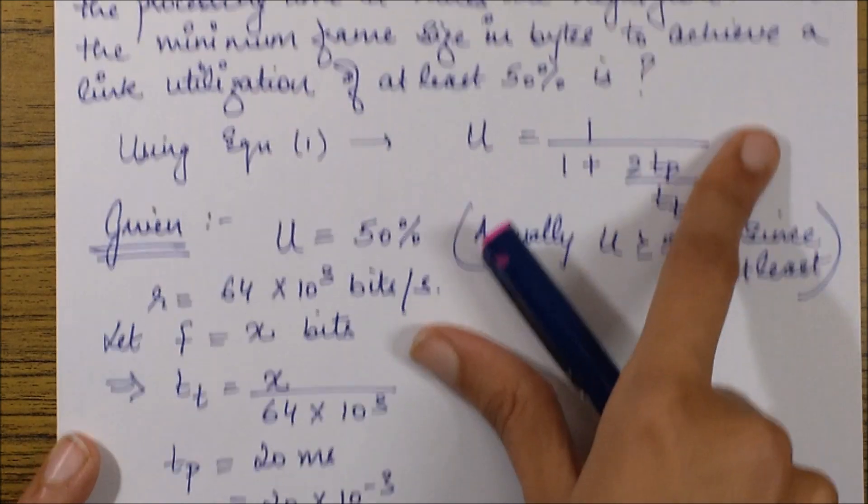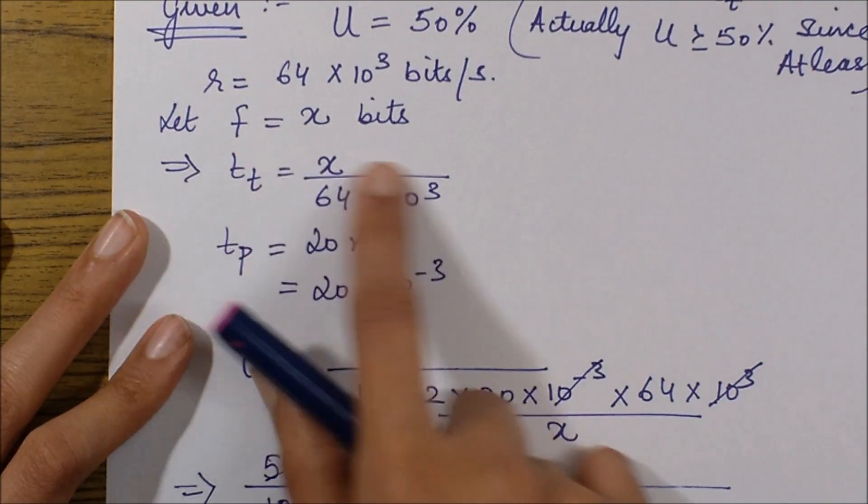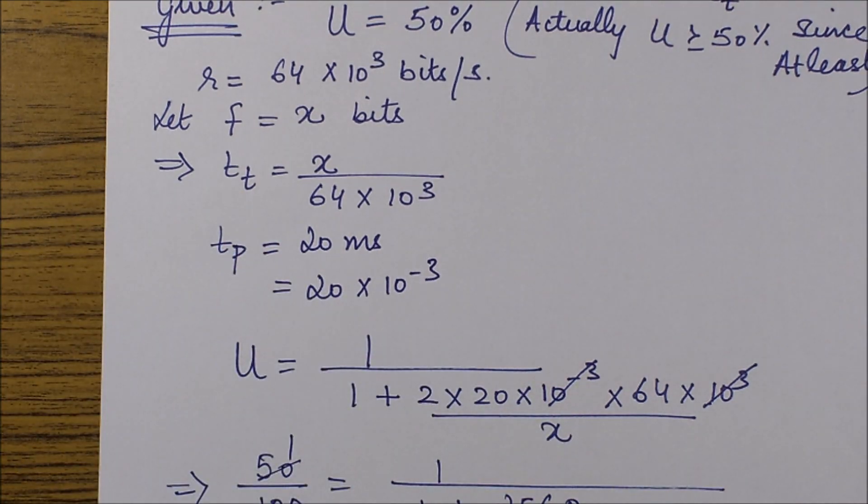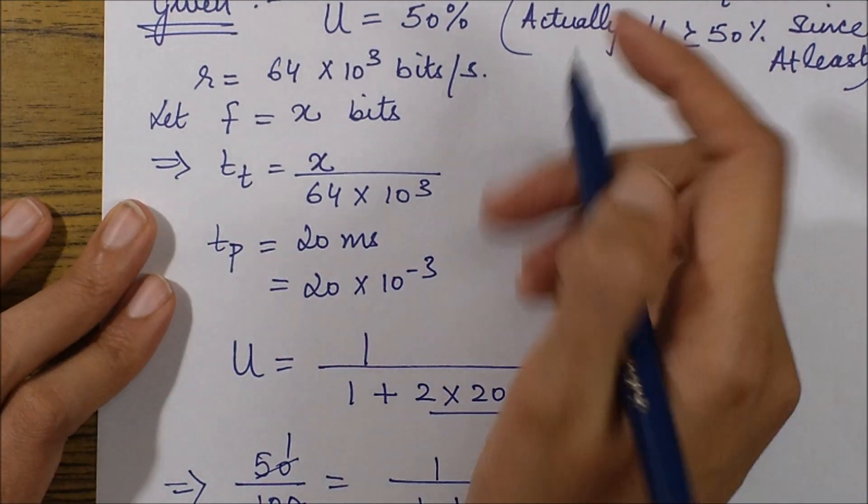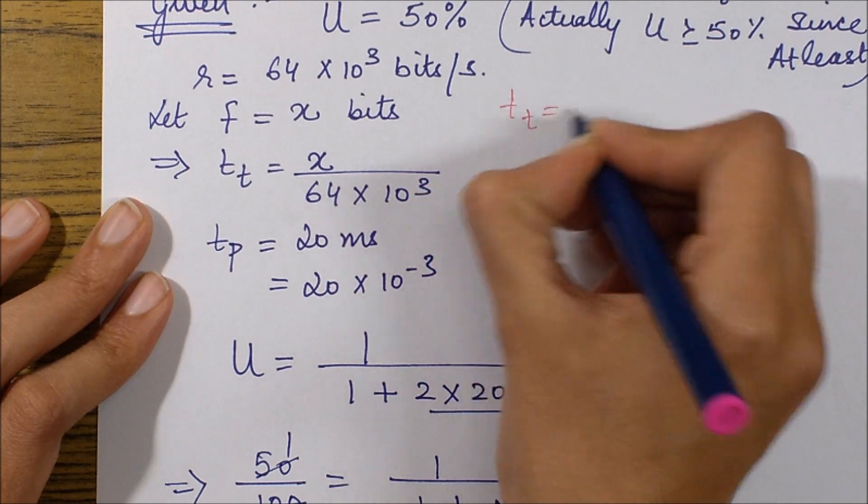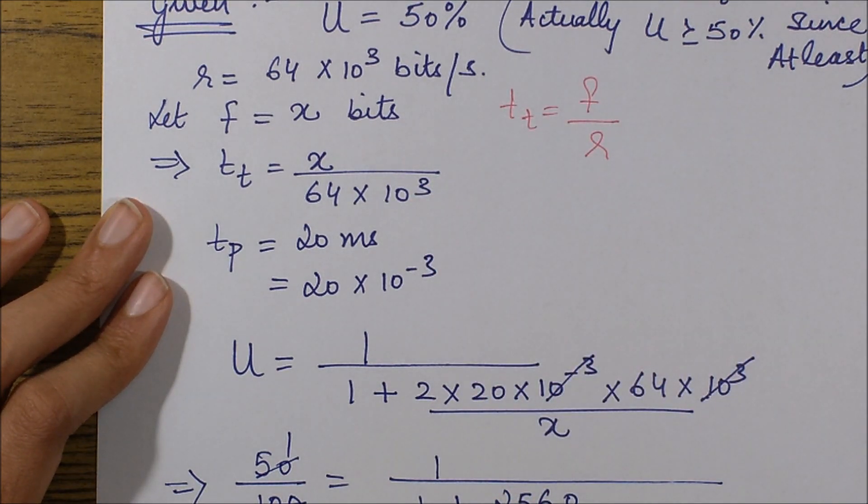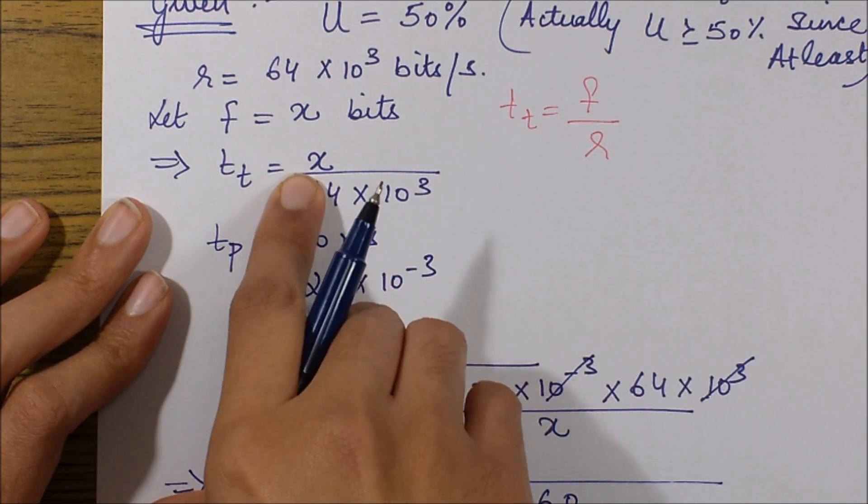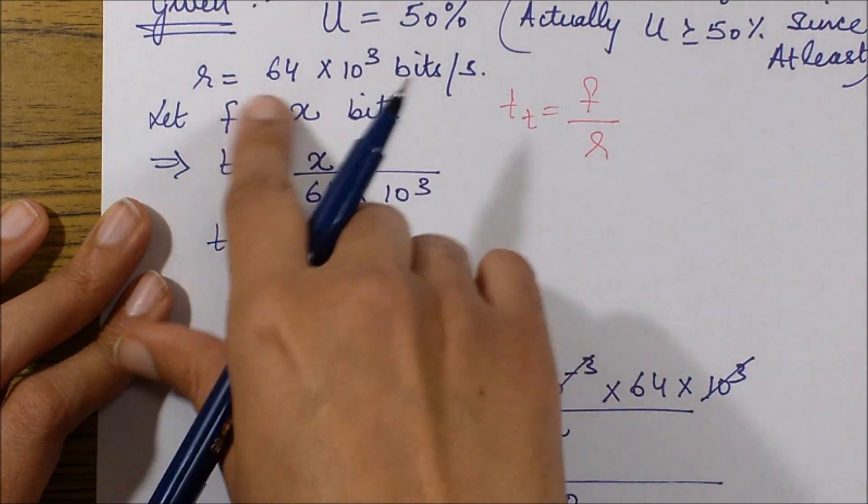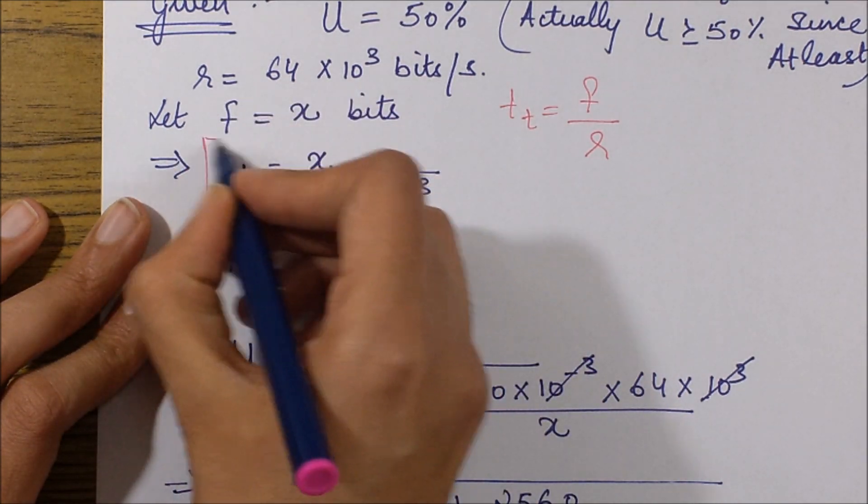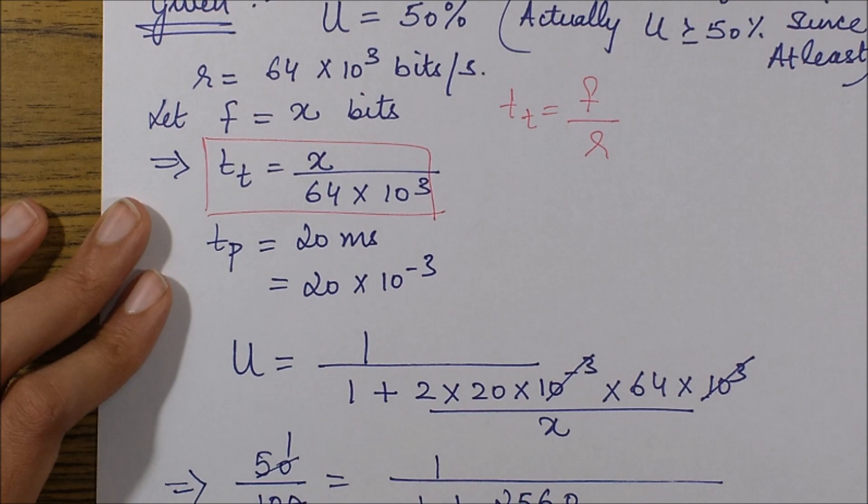Frame size is not given, which we need to find, so I've supposed it to be x. Then I put it in my formula. tt is f by r, so since f is x, I just get this equation with x over 64 times 10 to the power 3.